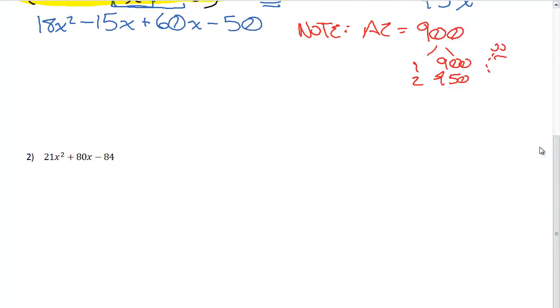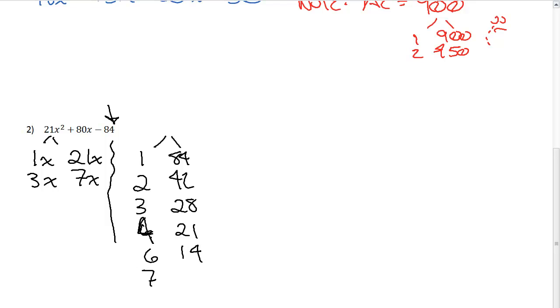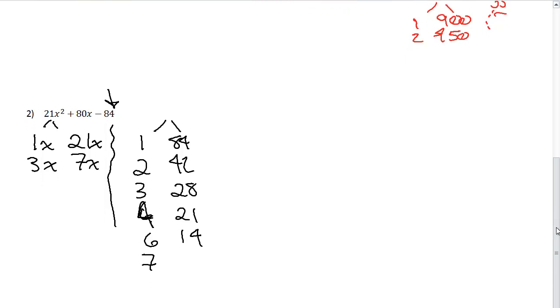Now on to the next, all right? And again, I'm going to do the factor pairs of 21x squared. So you're going to have 1x and 21x, 3x and 7x, and that one's done. And now I'm going to do the factor pairs of 84. So I have 1 and 84, 2 and 42, 3 and 28, 4 and 21, 6 and 14, and 7 and 12, okay? So those are the factor pairs for that one.